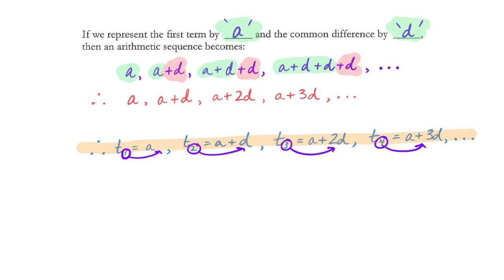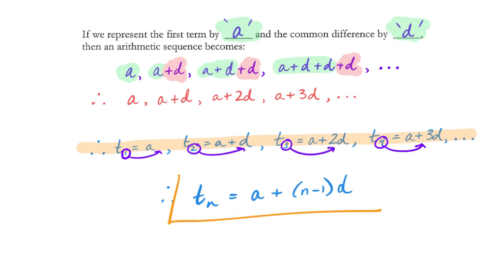Going back to term one — term one has no Ds. So what we could write is the general term for any arithmetic sequence. Therefore, term N — any generic term in that arithmetic sequence — has to be the first term plus one less than the term number of Ds. That is: term N equals A plus (N minus 1) times D. That is a huge thing for us — make sure you have that clearly highlighted in your notes because we're going to use it so much it will be memorized. Term N is equal to A plus (N minus 1)D — that becomes our primary definition for an arithmetic sequence.